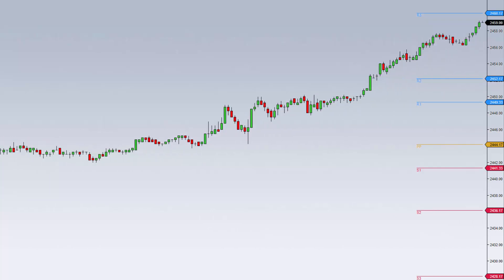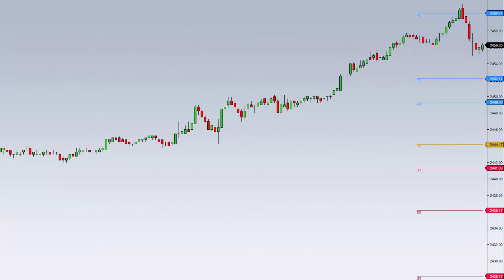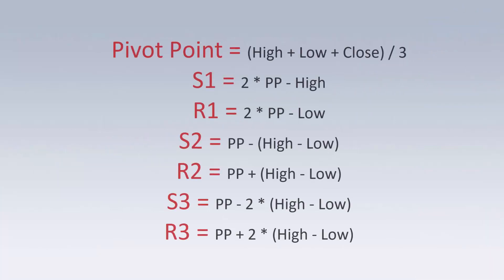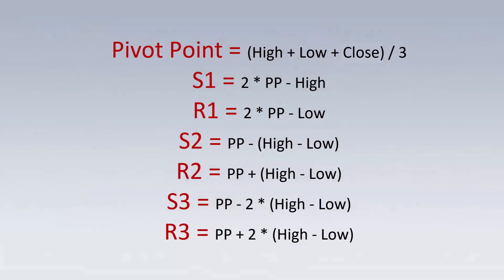Before we take a look at a few examples of using Pivot Points, it's useful to understand how these levels are calculated. NinjaTrader 8 plots a total of 7 points based on the previous high, low, and close values reported by your data provider. The pivot point value is determined using the average of the high, low, and close values. The accompanying support and resistance points are plotted based on the displayed calculations. Feel free to pause the video and review these for a moment.